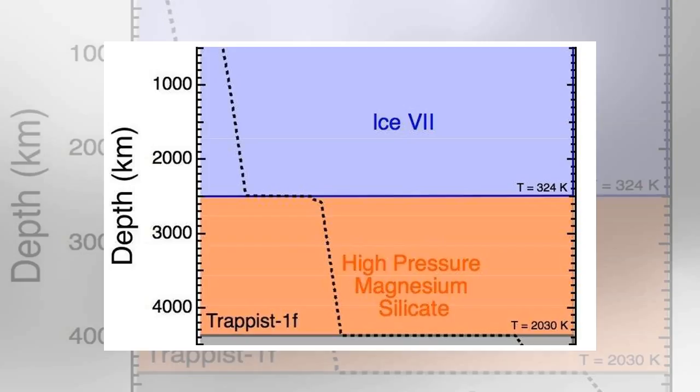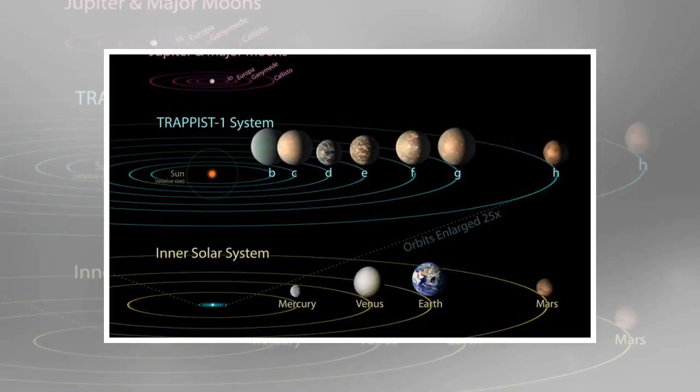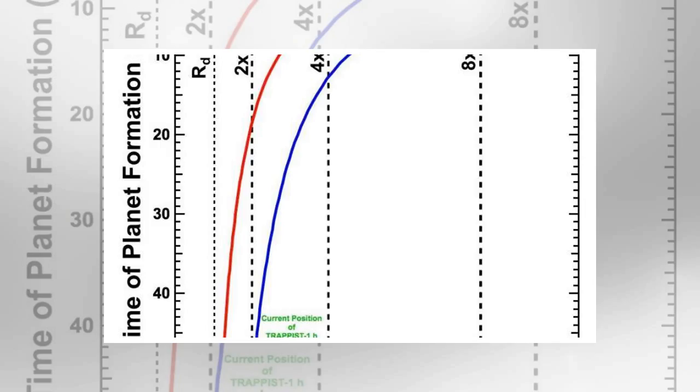Credit NASA JPL Caltech. The researchers suggest the results could also have implications for theories on how planets develop, as they note that all seven of the planets in the Trappist-1 system lie within the snow line, but the model shows that the outer planets likely formed beyond that line and migrated inwards over time.